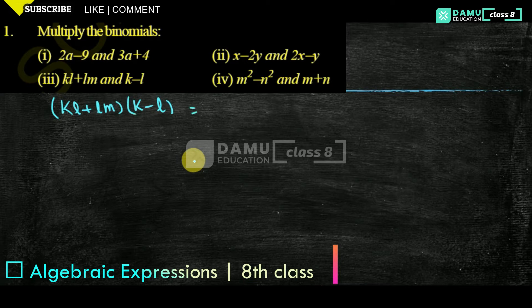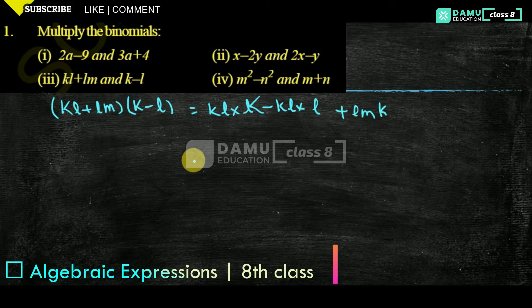Just first with the first one, as I told: kl into k, first one. Then kl into l. Then plus lm into k, minus — minus into plus will become minus lm into l.